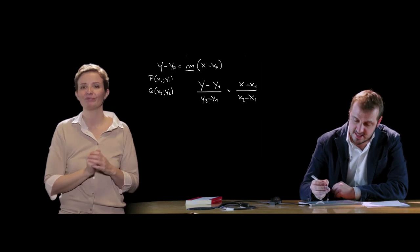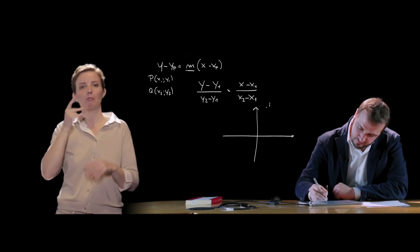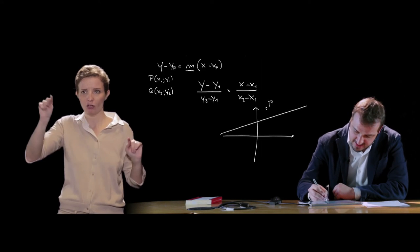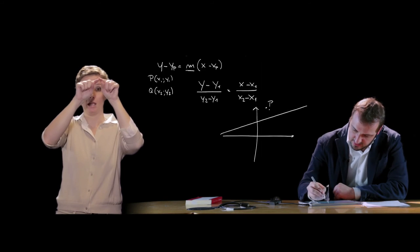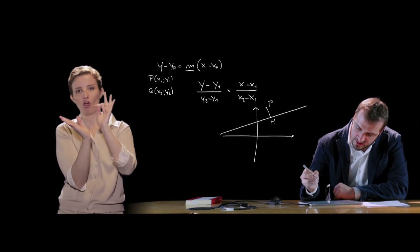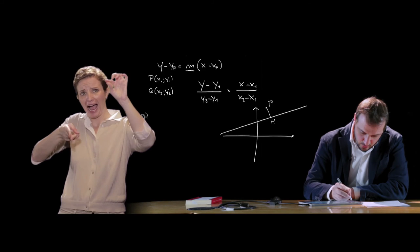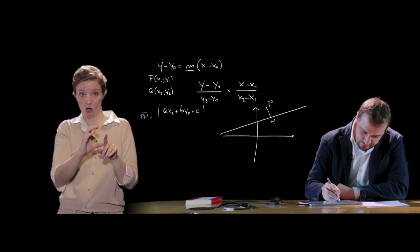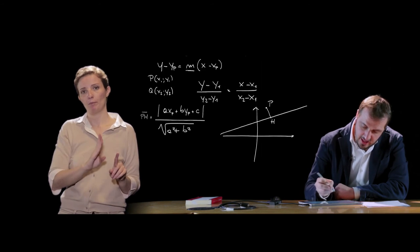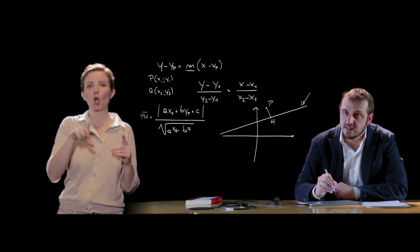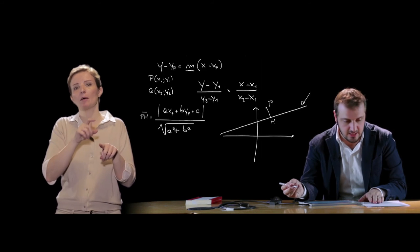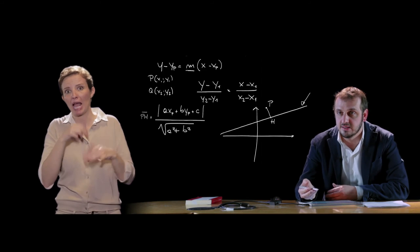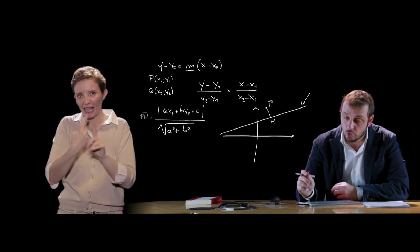Un'altra formula importante riguarda la distanza di un punto P da una retta di equazione nota. La distanza del punto dalla retta è il segmento che ha per estremi il punto P e il piede della perpendicolare alla retta r passante per P, chiamato H. Questa distanza PH è uguale al valore assoluto di (axP + byP + c) diviso per la radice quadrata di (a² + b²), dove a, b, c sono i coefficienti della retta in forma implicita. Il valore assoluto è necessario perché la distanza è sempre positiva.